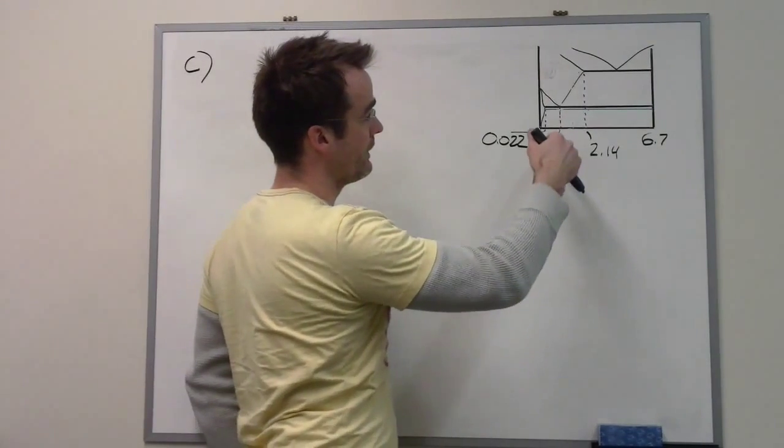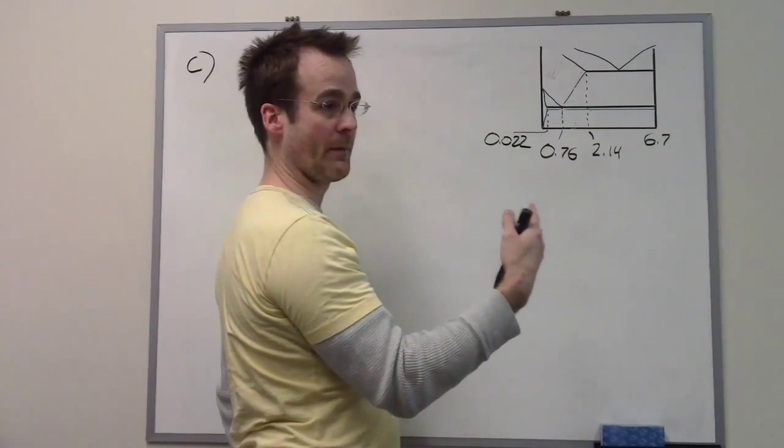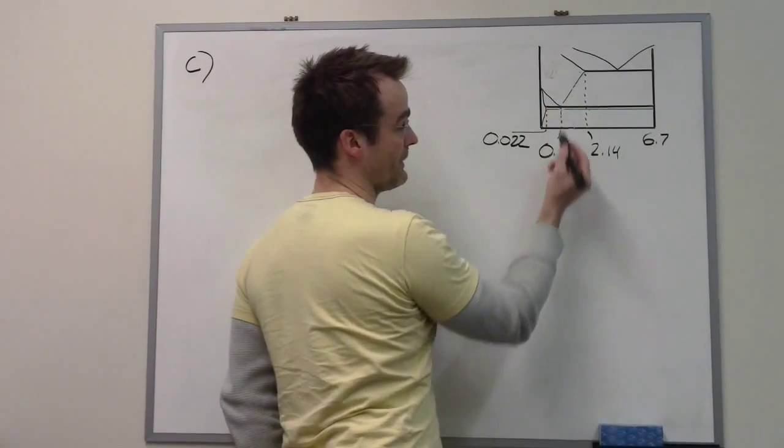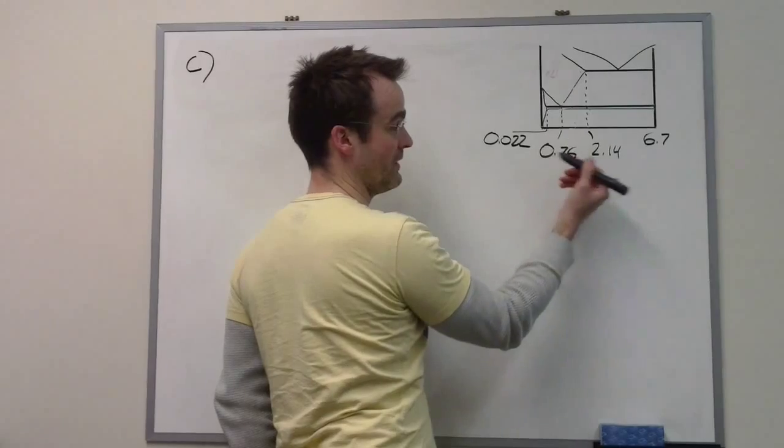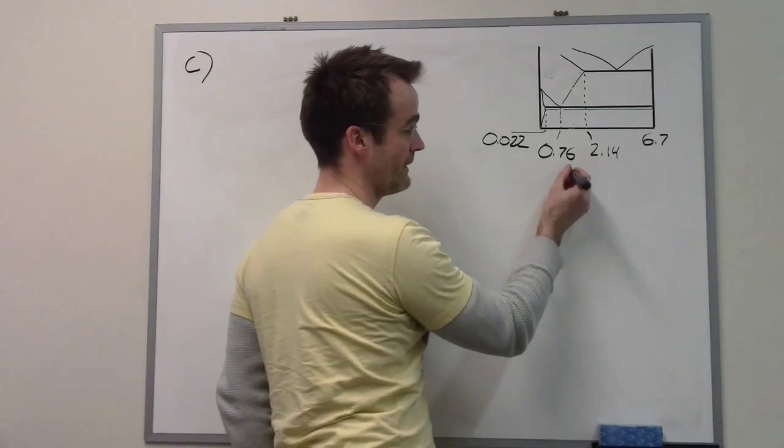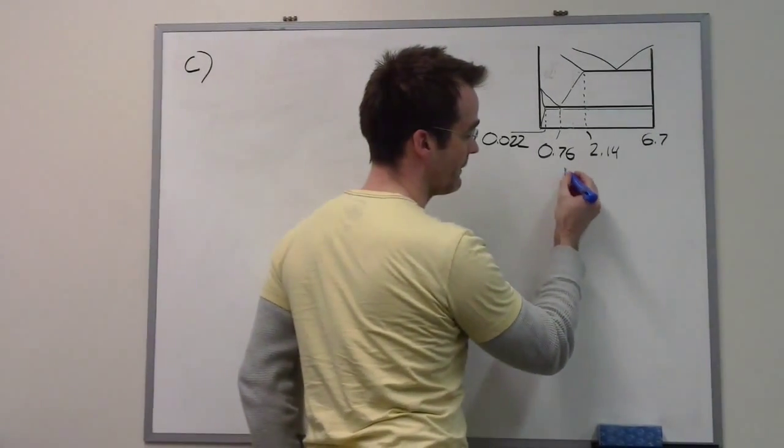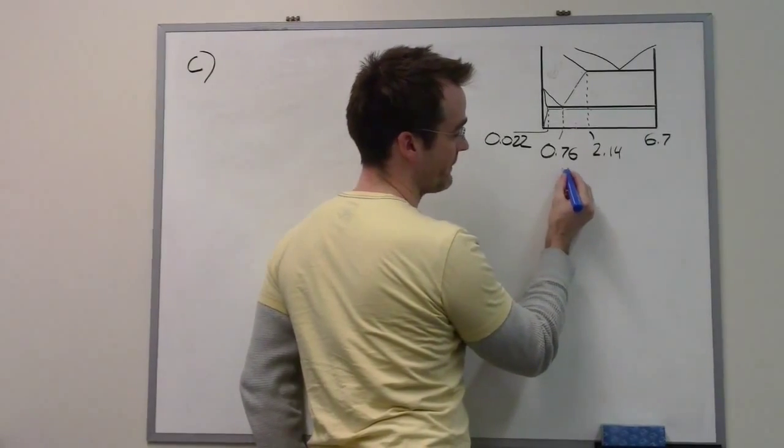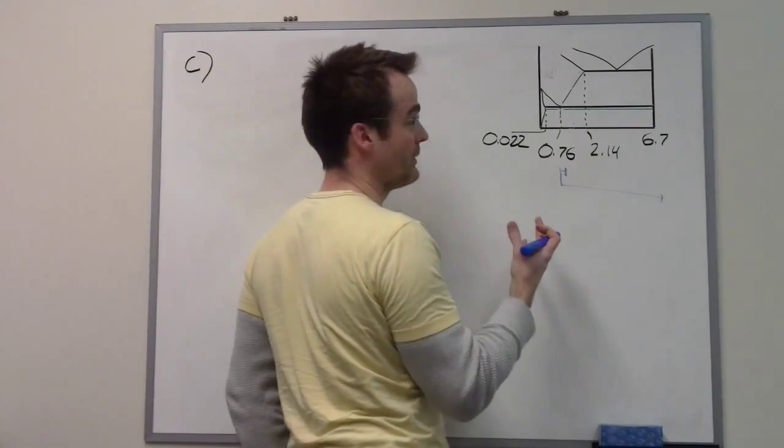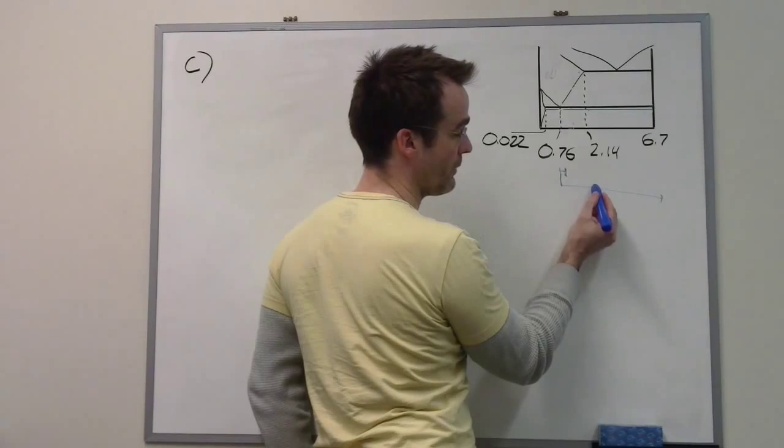So we want to know how we can form the maximum amount of the primary phase. If we cross this, for example, say we cross with a composition close to 0.76, the lever rule is going to tell us that this side of the lever divided by the total is really small. If we move over closer and closer to 2.14...